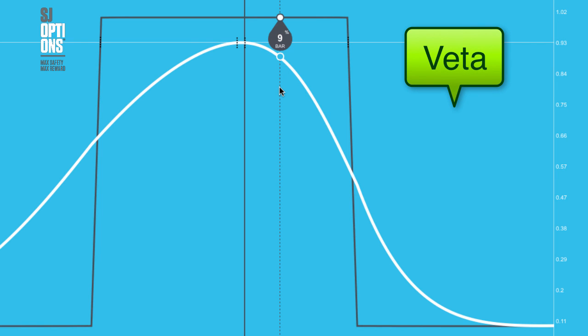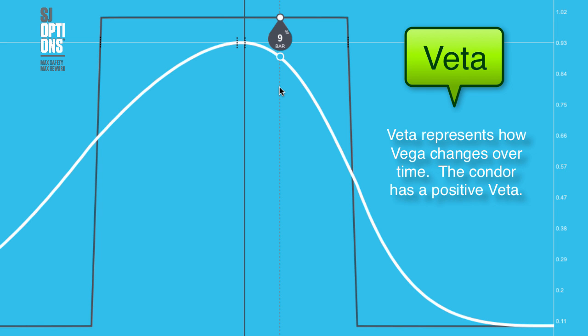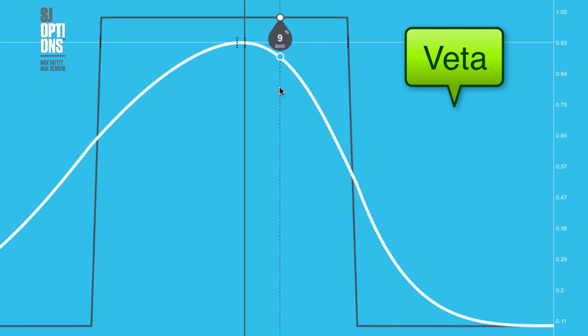Another Greek we can talk about is your d-vega d-time. As you go through time in the condor, the overall trade's vega position increases, so over time it becomes more positive vega. This could be beneficial or detrimental to the trade depending on what happens long term with volatility. It's a day-by-day change, so the d-vega d-time doesn't impact the condor strongly by the minute — it's timed. As you go through time in the trade, that vega position increases.